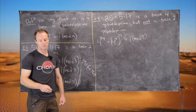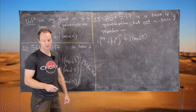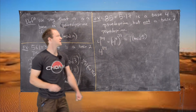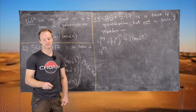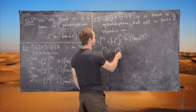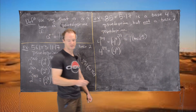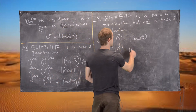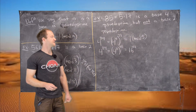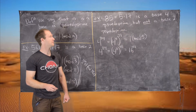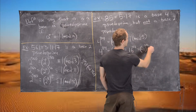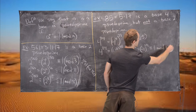Now we'll work mod 17. We have 4 to the 84, and I'll use a slightly different trick here. This equals 4 squared to the 42, which is 16 to the 42. Now 16 is congruent to negative 1 mod 17, so this equals negative 1 to the 42, which is congruent to 1 mod 17.